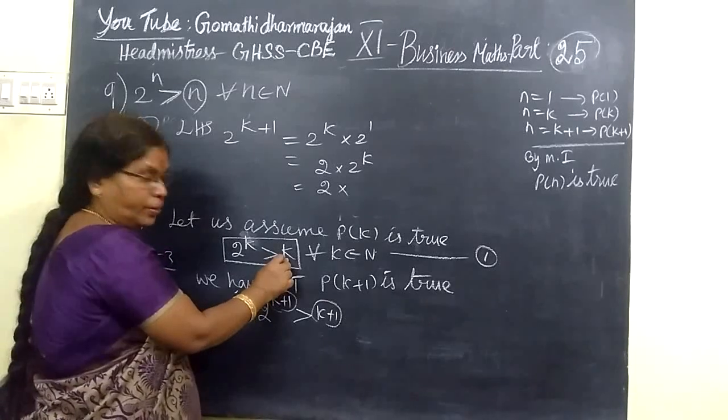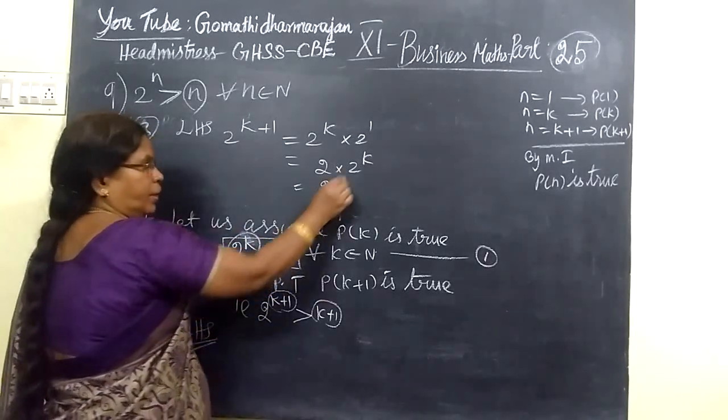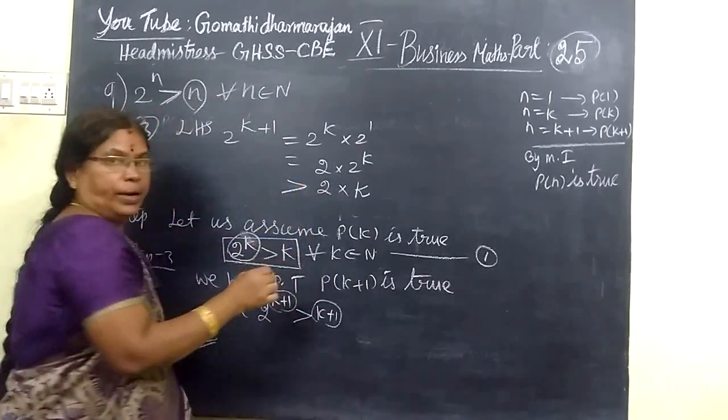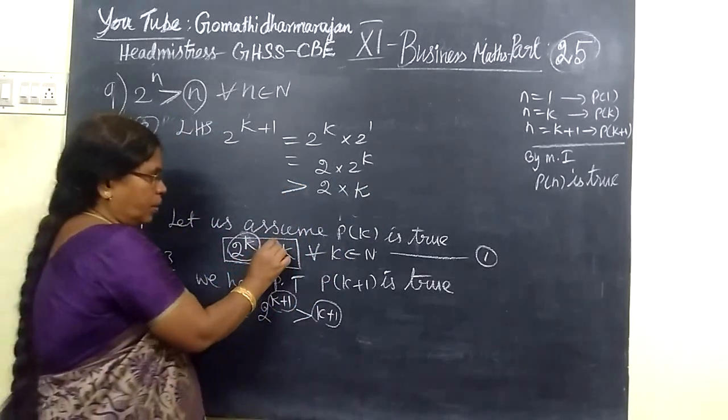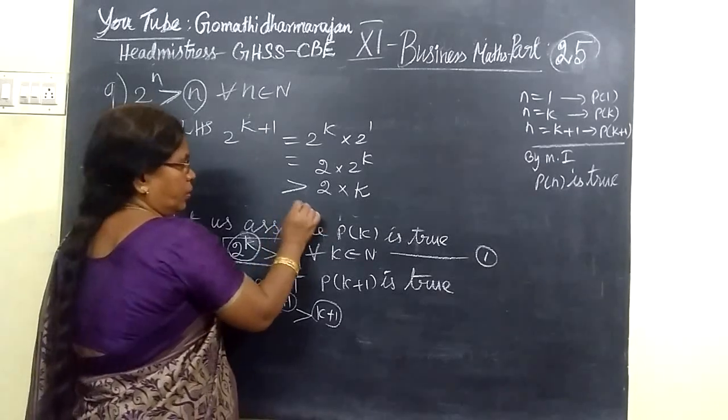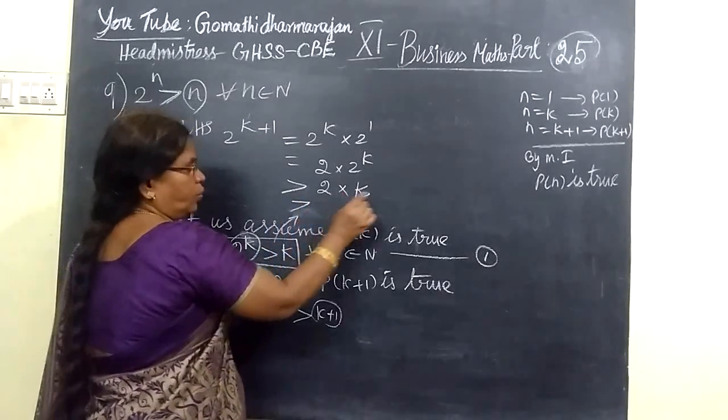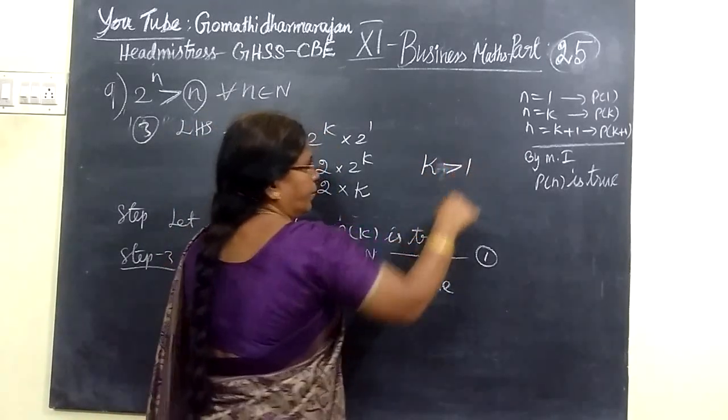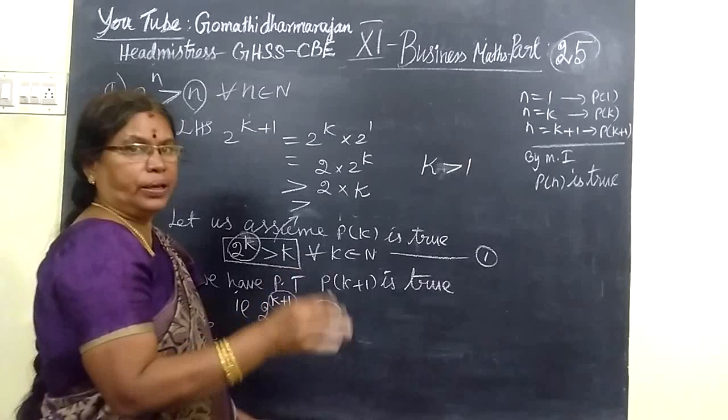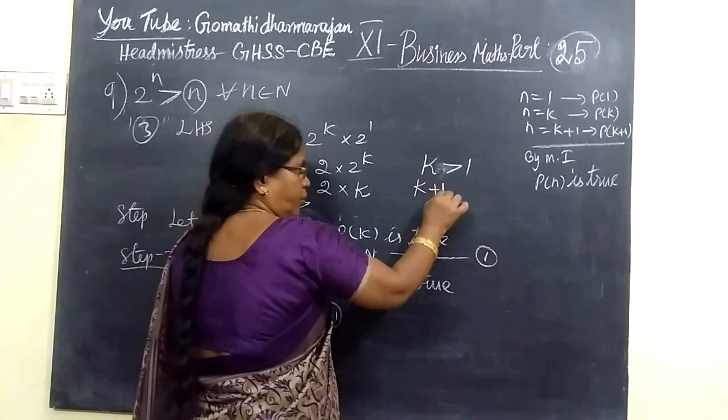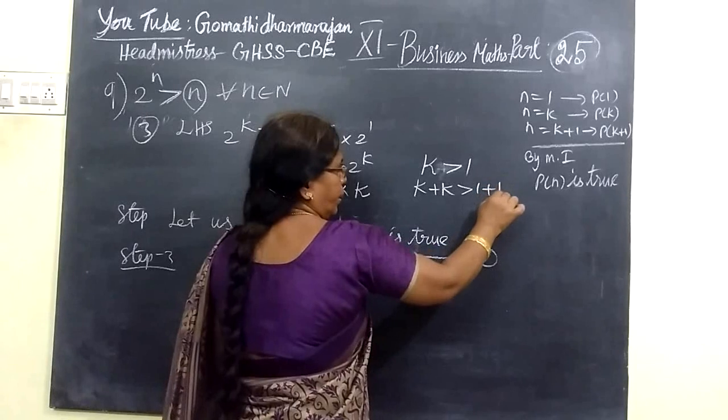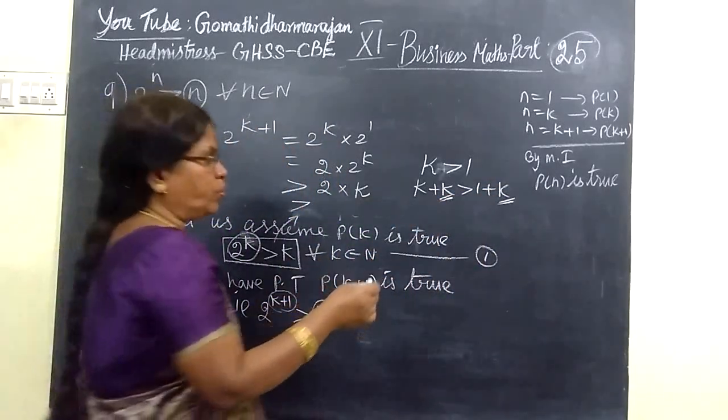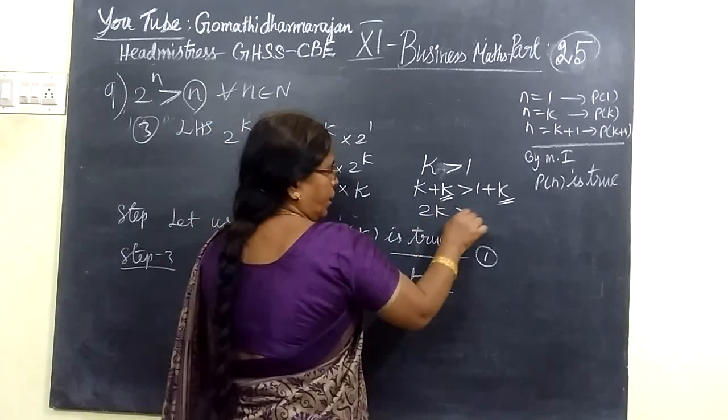So 2 into 2 power K. Now we know 2 power K is greater than K. So this is greater than K is positive. Letter equal to n i is greater than e. So this is greater than K. K greater than 1. K is greater than 1. K plus K, K is greater than K. Adding K on both sides, so 2K is greater than 1 plus K.